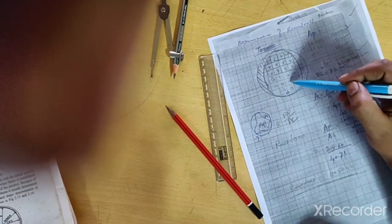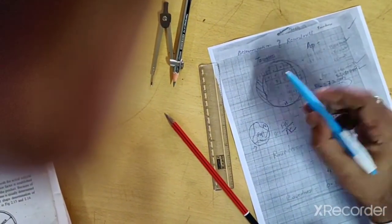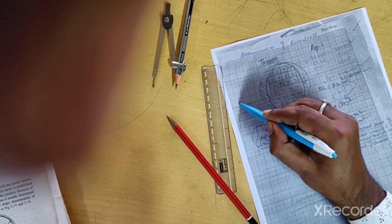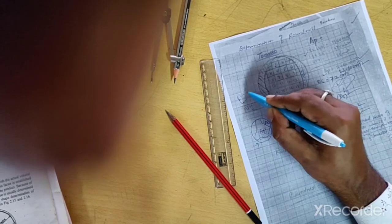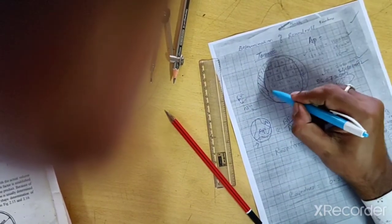By measuring all these, whatever the number of squares - full square, half square, 3 by 4 square, 1 by 4 square - we have to measure all the squares that are enclosed by this outline.